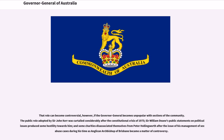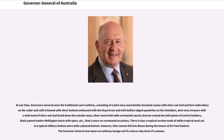Sir William Deane's public statements on political issues produced some hostility towards him, and some charities disassociated themselves from Peter Hollingworth after the issue of his management of sex abuse cases during his time as Anglican Archbishop of Brisbane became a matter of controversy. At one time, Governors-General wore the traditional court uniform — a dark navy wool double-breasted coat with silver oak leaf and fern embroidery, silver buttons embossed with the royal arms, bullion-edged epaulettes, dark navy trousers with silver braid, silver sword belt with ceremonial sword, bicorn hat with ostrich feather plume, and black patent leather Wellington boots with spurs. There was also a tropical version in white wool worn with a plumed helmet. However, that custom fell into disuse during the tenure of Sir Paul Hasluck; the Governor-General now wears an ordinary lounge suit if a man, or day dress if a woman.